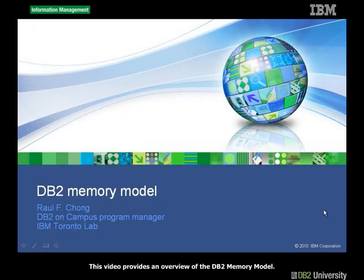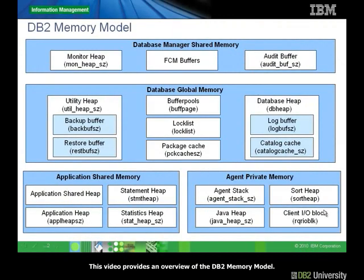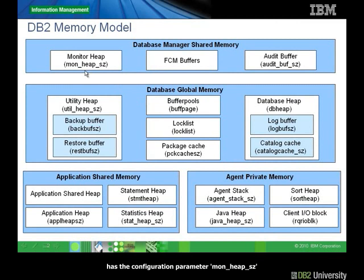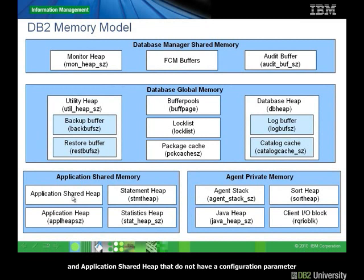This video provides an overview of the DB2 memory model. The DB2 memory model consists of different areas as shown in the chart. In parentheses are the dbmcfg or dbcfg configuration parameters that control each memory area. For example, monitorHeap at the top has the configuration parameter monHeapSz. There are some memory areas like FCM buffers and applicationSharedHeap that do not have a configuration parameter because normally DB2 would set those up for you.